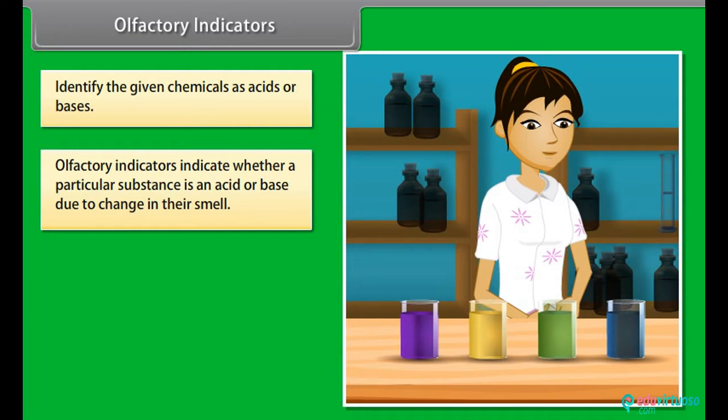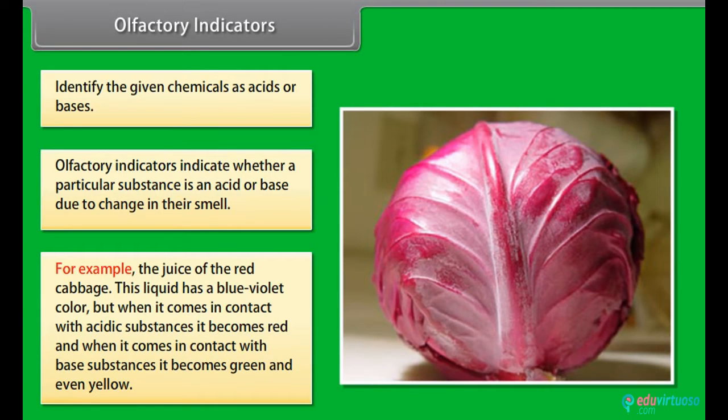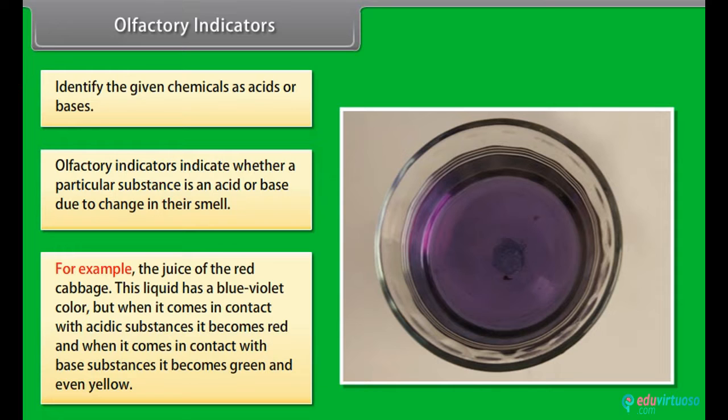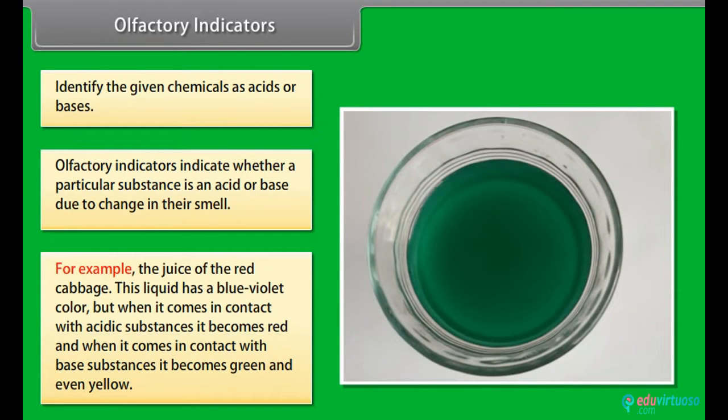An olfactory indicator works on the principle that when an acid or base is added to a substance, then its odor cannot be detected. For example, the juice of the red cabbage. This liquid has a blue-violet color, but when it comes in contact with acidic substances, it becomes red, and when it comes in contact with base substances, it becomes green and even yellow.